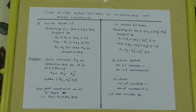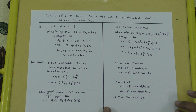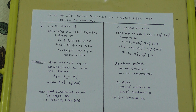Hello, welcome to bingo.com. Today we are going to study the dual of a linear programming problem when a variable is unrestricted and the constraints are mixed. In previous videos, we have seen different types of problems and some concepts about duality.